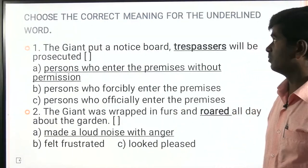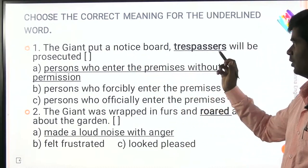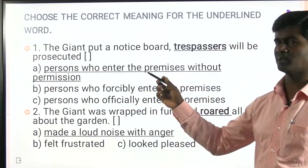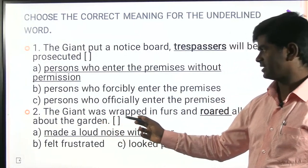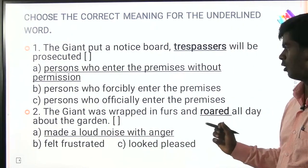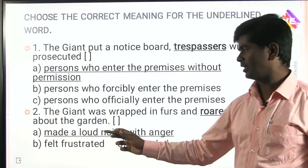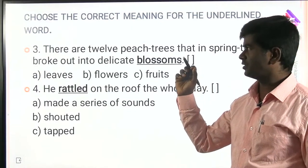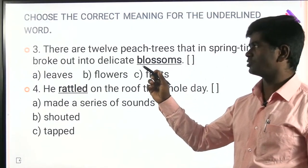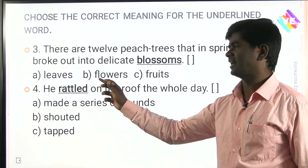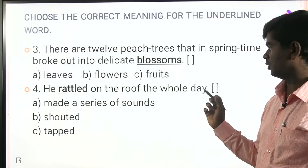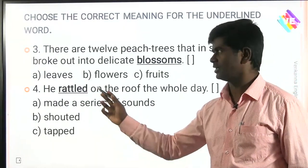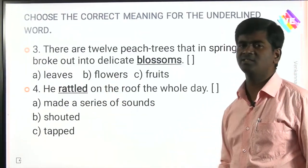Choose the correct meaning for the underlined words. 'The giant put a notice board — trespassers will be prosecuted.' Trespassers means persons who entered the premises without permission. 'The giant was wrapped in cloak and roared all day about the garden' — roared means rolled and made a loud noise. 'There are twelve peach trees that in springtime broke out into delicate blossoms' — blossoms means flowers. 'He rattled on the roof the whole day' — rattled means made a series of sounds.